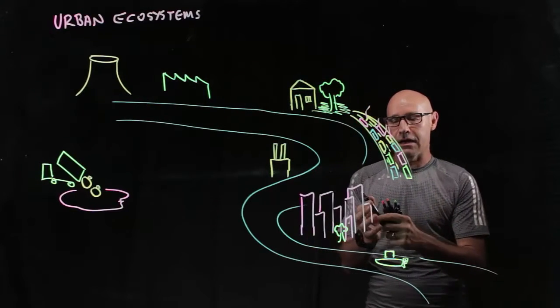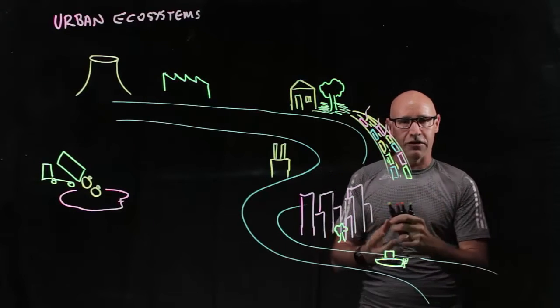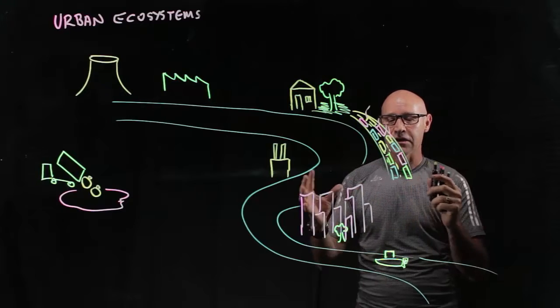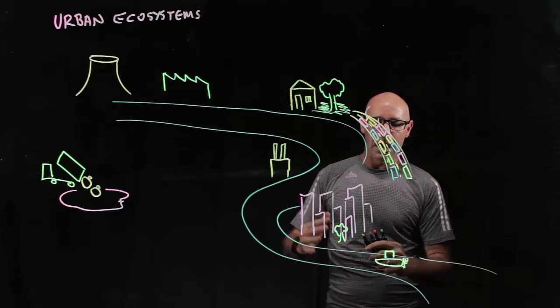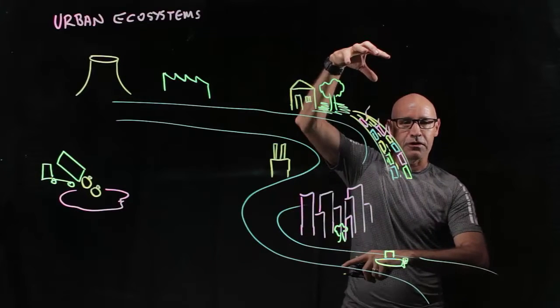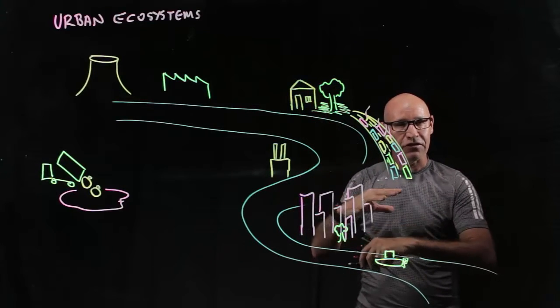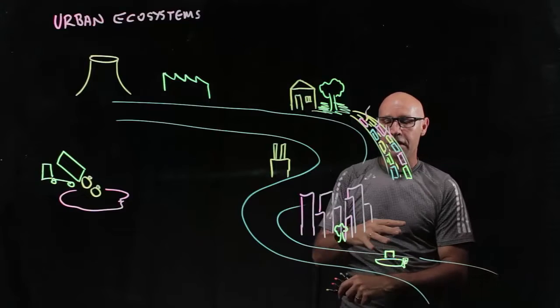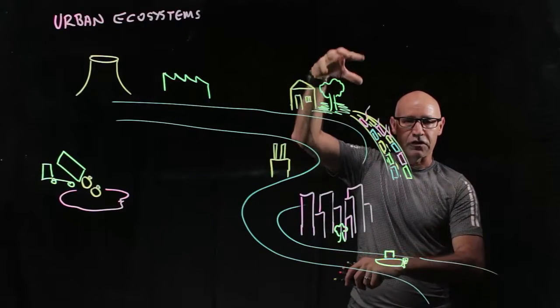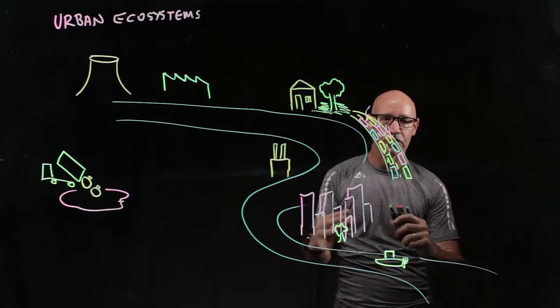In urban areas, we've got a high concentration of humans in a small area. Because of our ability to build buildings upwards, we've got this 3D stratification of an ecosystem. So we've got more and more people living on top of each other, and a high concentration.